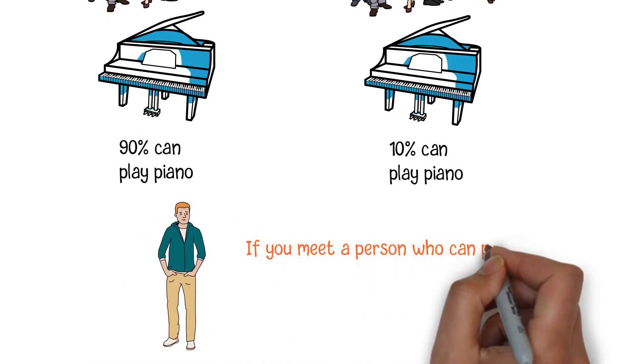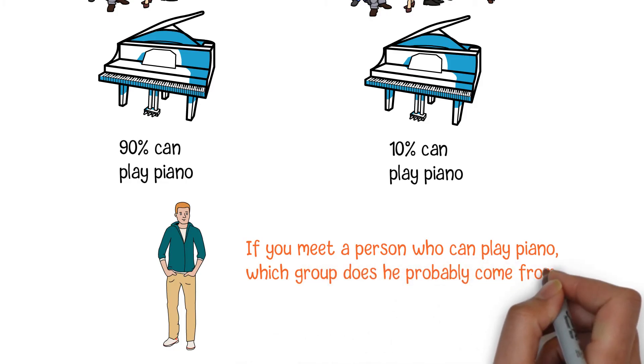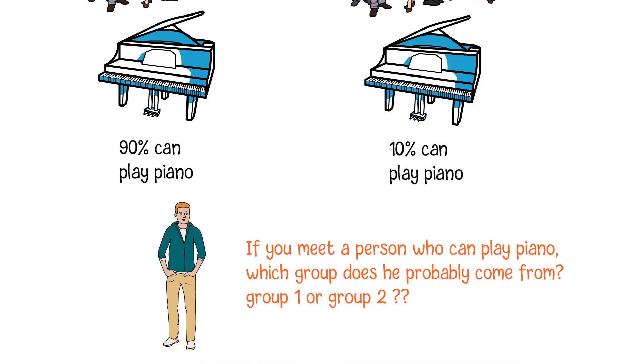If you meet a person who can play piano, which group does he probably come from? Group 1 or Group 2? If we only consider the percentage of people who can play piano, you may feel that this person is very likely coming from Group 1 because it has a much higher percentage than Group 2.